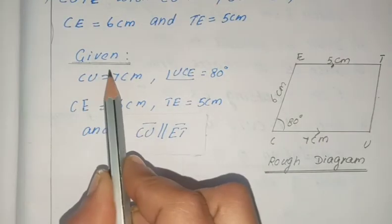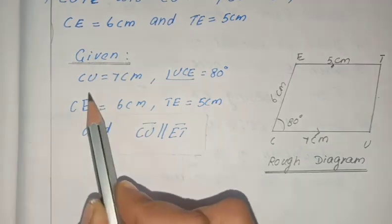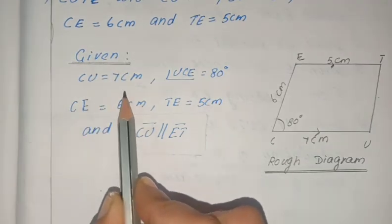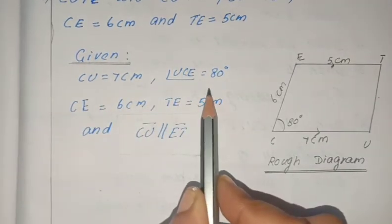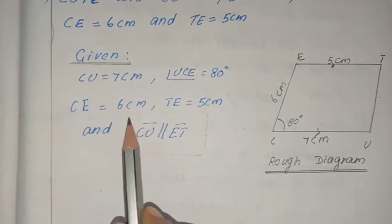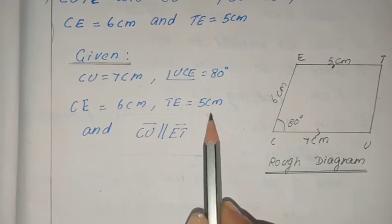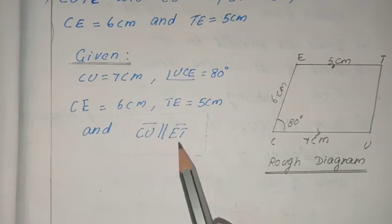Now we will write the given. Given: CU is equal to 7 cm, angle UCE is equal to 80 degrees, CE is equal to 6 cm, TE is equal to 5 cm, and we know that CU is parallel to ET.